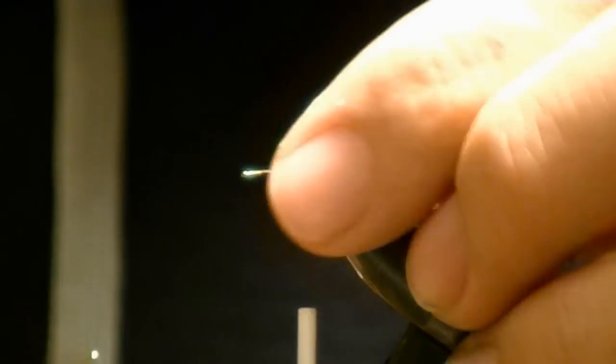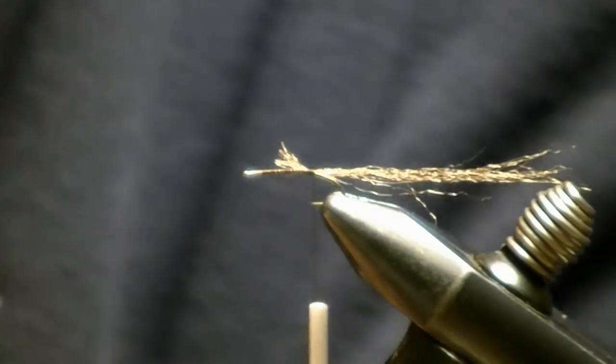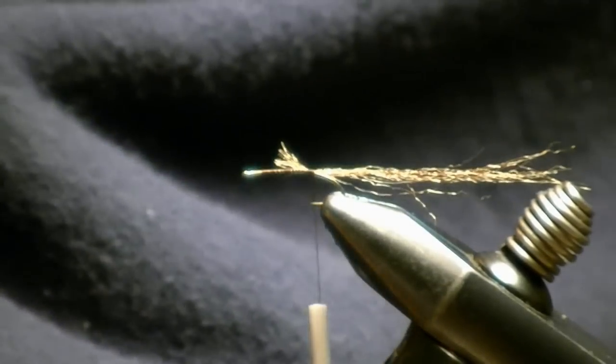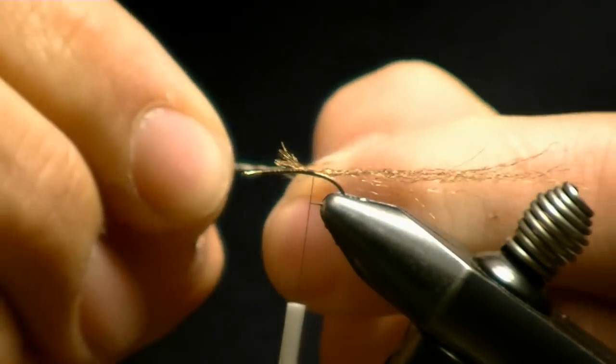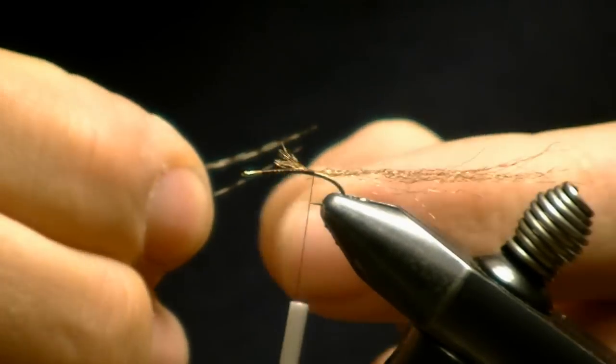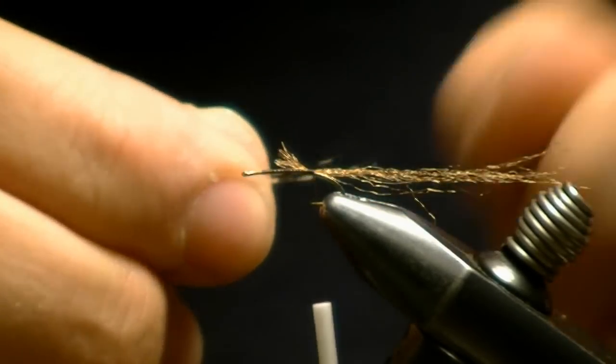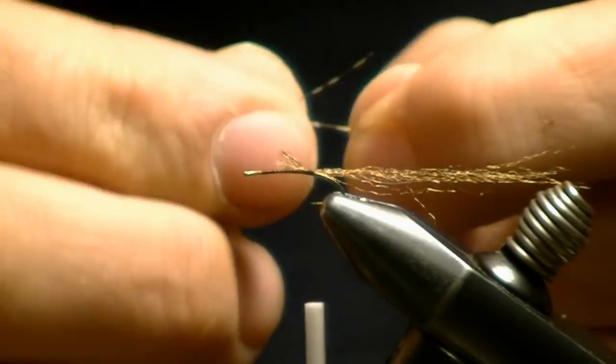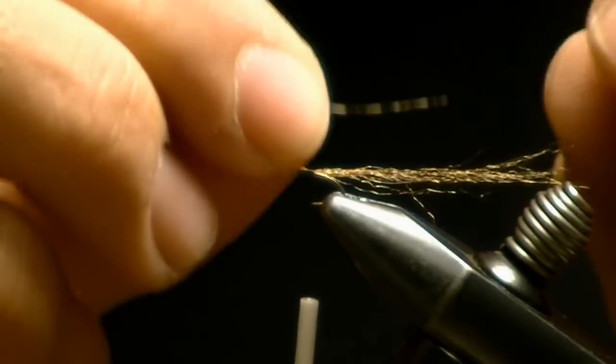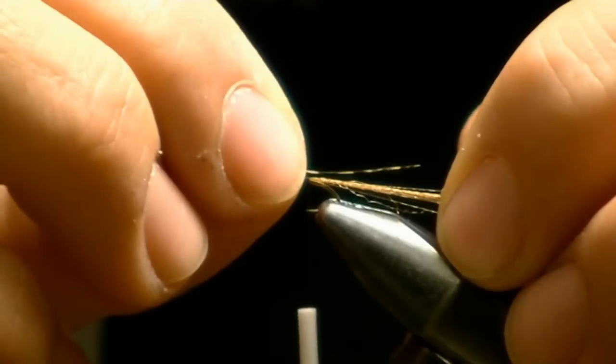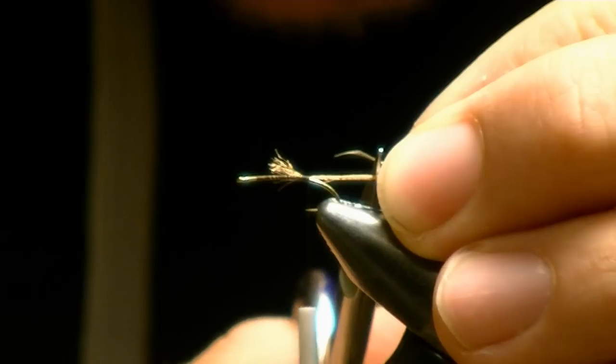I'm going to clip this up so the body stays even, and I'm going to take just two partridge feathers, or two fibers off of a partridge feather. Kind of determine how long I want them. I'm going to cut this short.